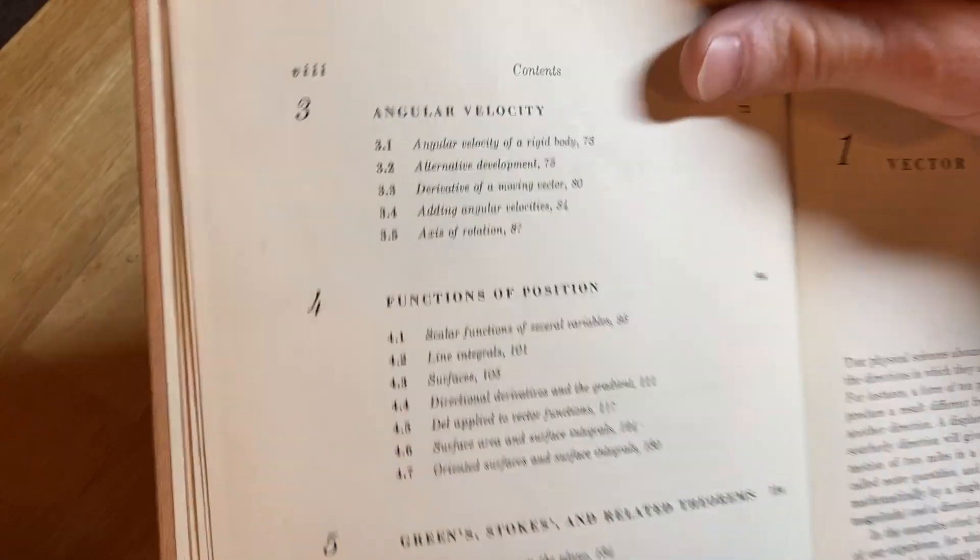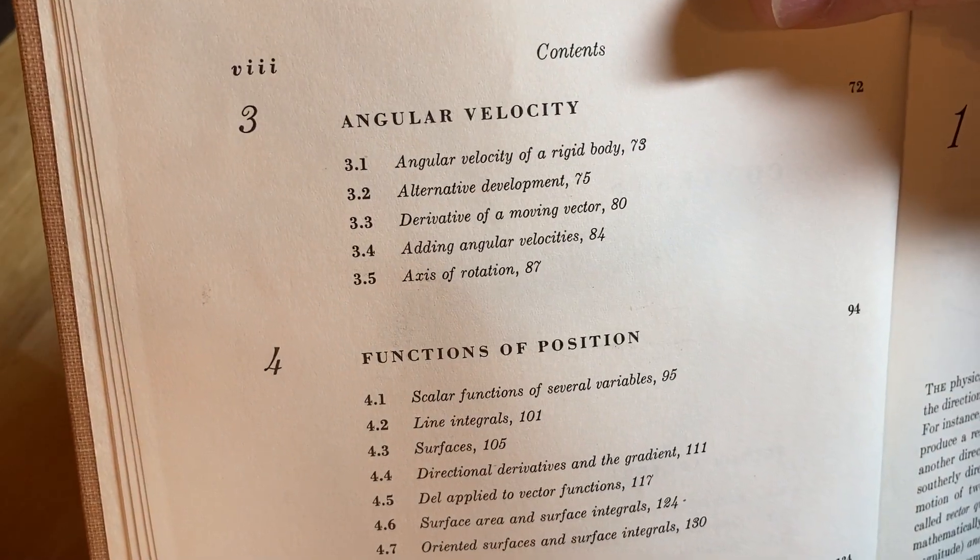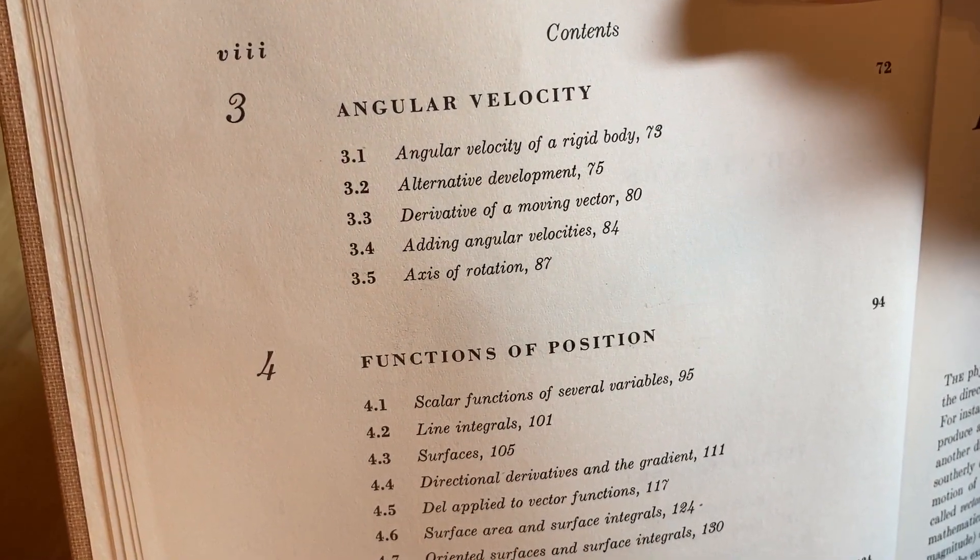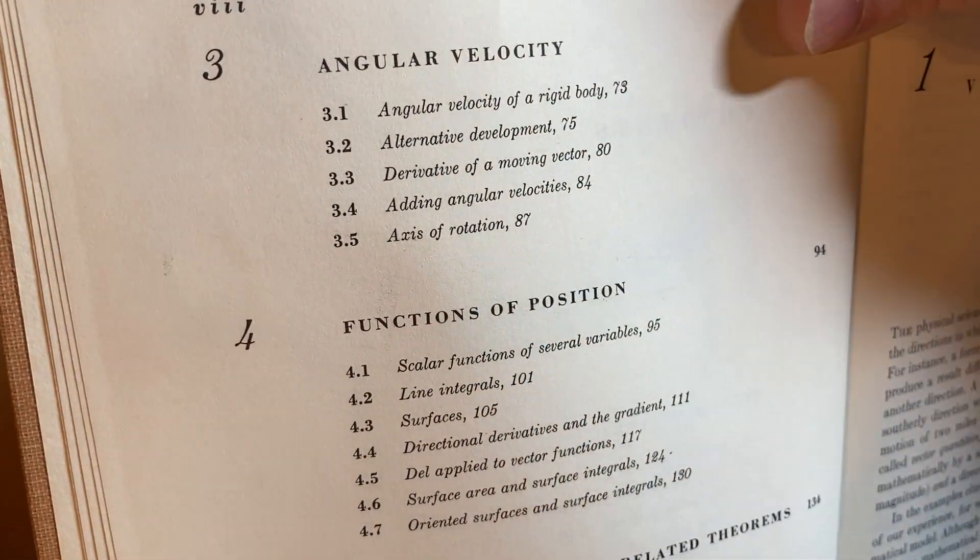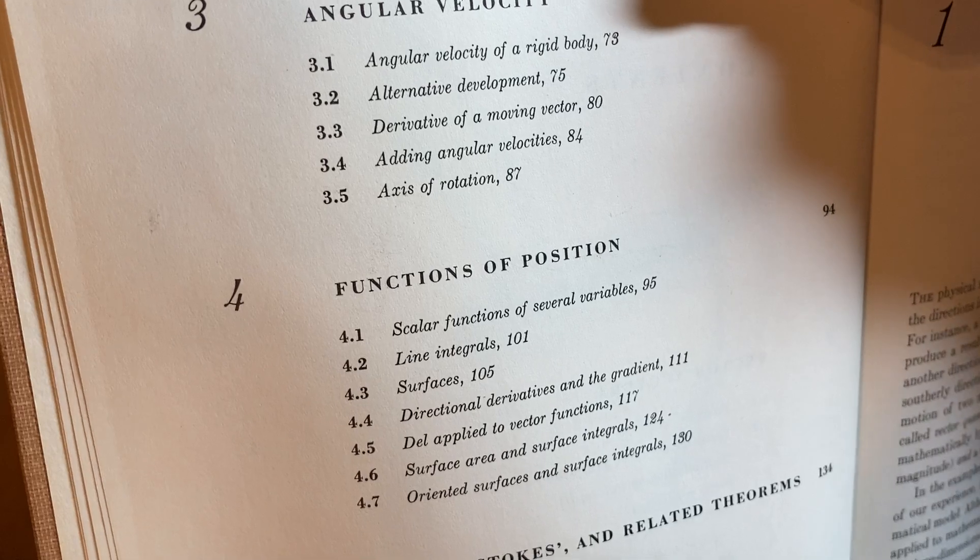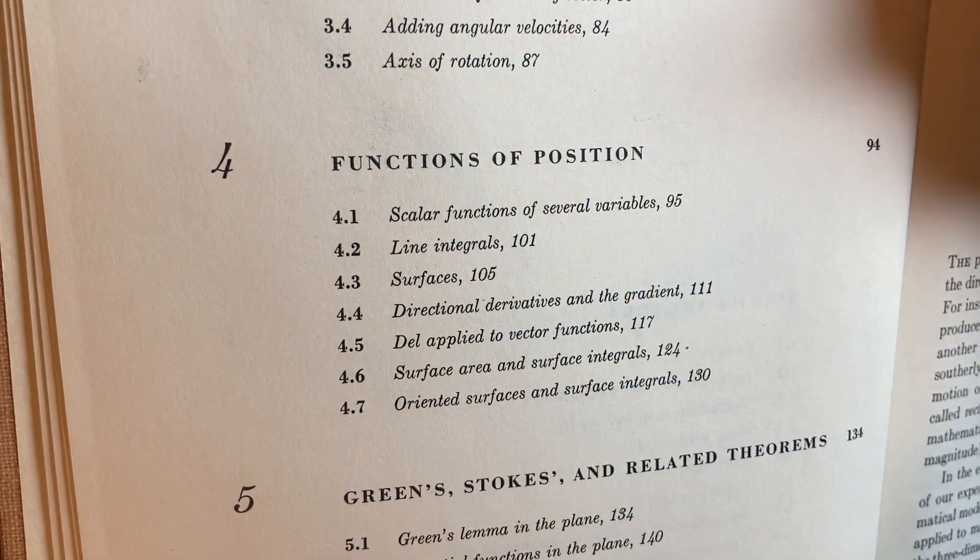And what do we have here? Angular velocity of a rigid body. Derivative of a moving vector. And then functions of position.